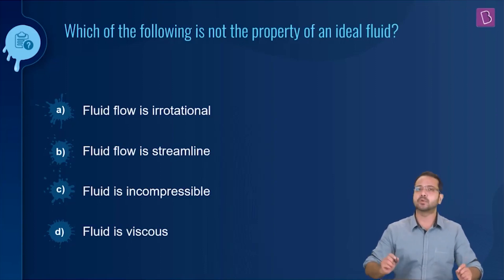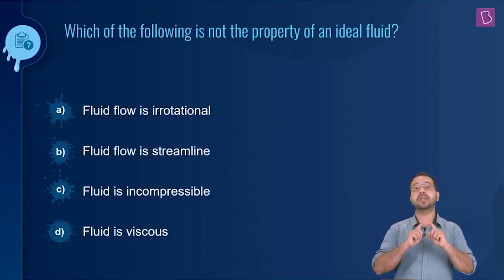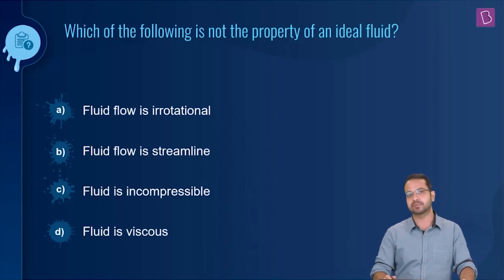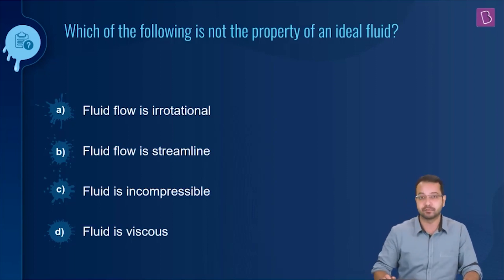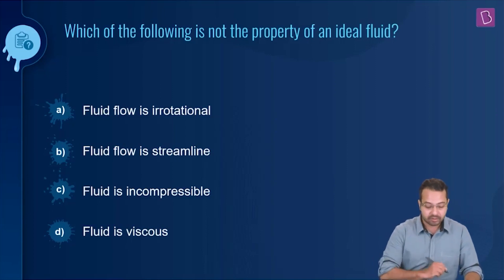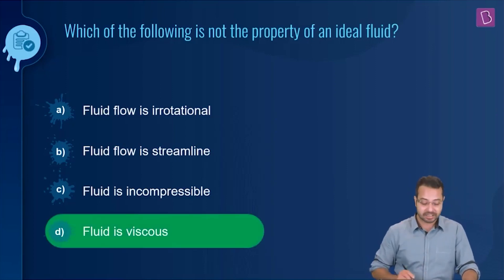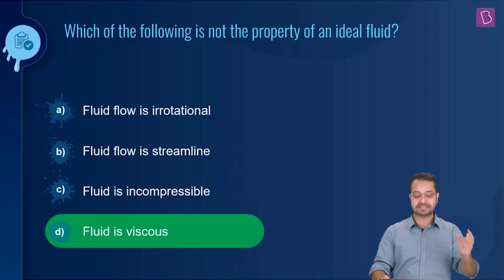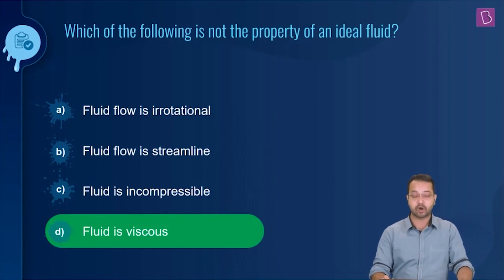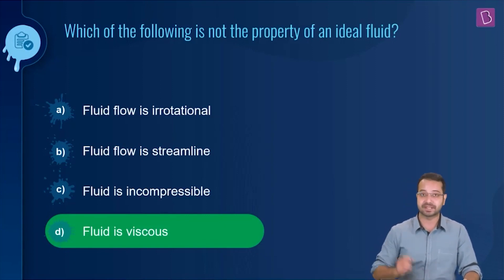Fluid is viscous — this is what we don't consider for an ideal fluid. We do not consider any drag force caused by the viscosity of the fluid. Hence, for an ideal fluid, A, B, and C are correct. But fluid being viscous is something we don't consider for an ideal fluid. Hence, the correct option is option D: fluid is viscous.